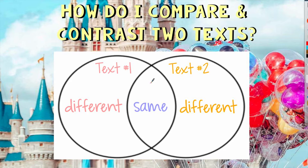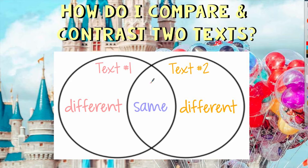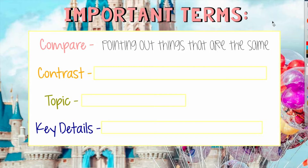Now that we've gone over the Venn diagram, let's talk about some important terms we need to understand before we get started. There are four important terms. The first word is compare. Whenever you are comparing something, you are pointing out things that are the same. In each text we need to be thinking about things that were mentioned in both — that's how we can point out things that are similar.